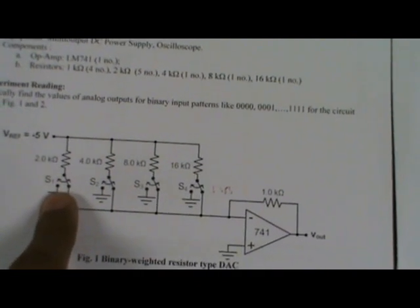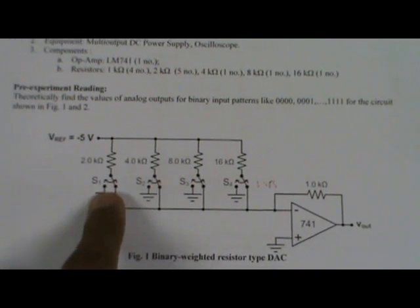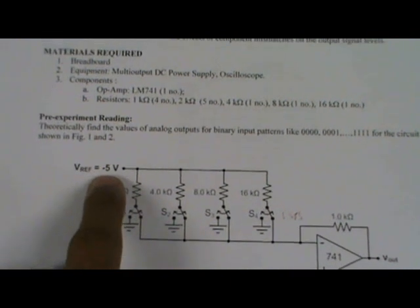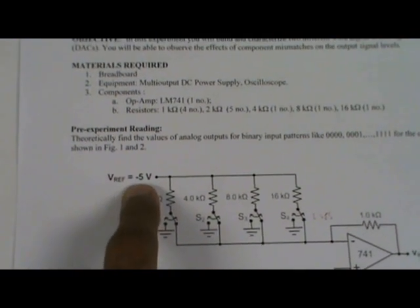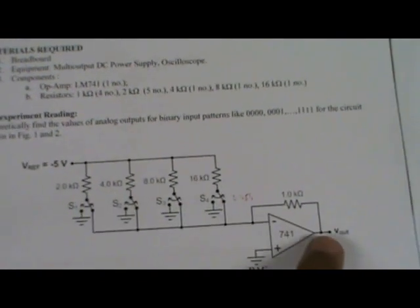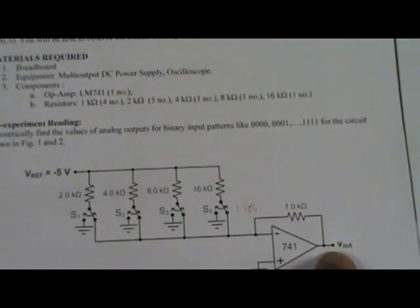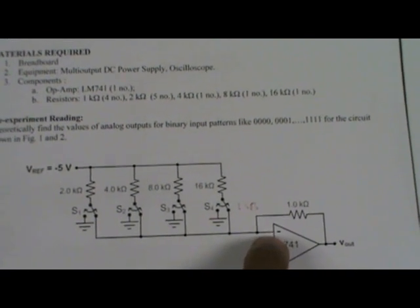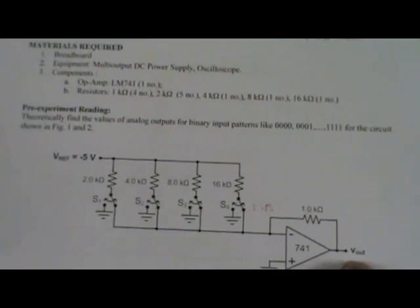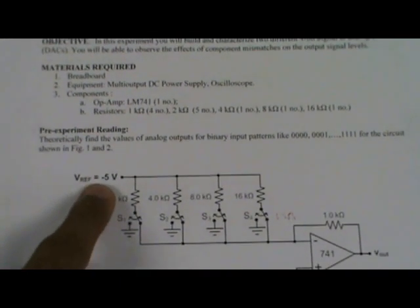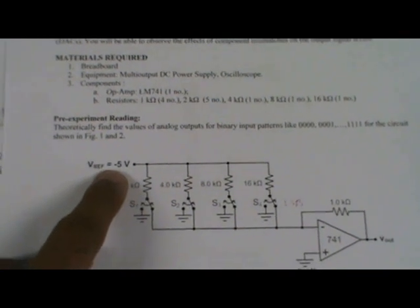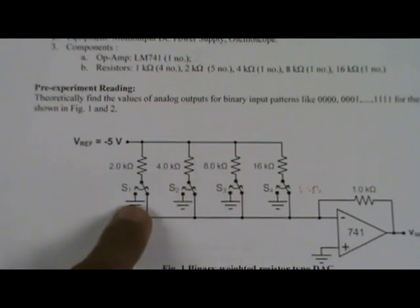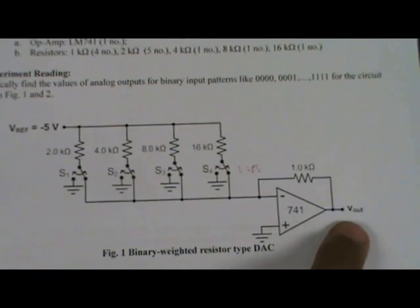Here some understanding is very important before performing the experiment. We selected here minus 5V intentionally to get positive voltage at output Vout because of the inverting amplifier, which will give us positive output. So obviously we will get the output between 0 to 5V maximum.